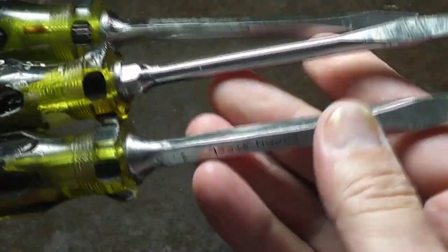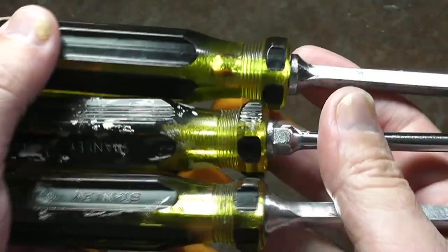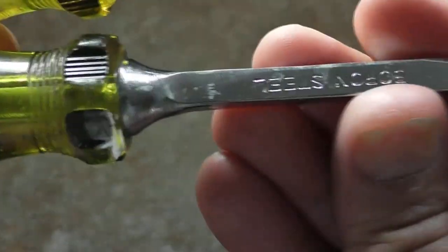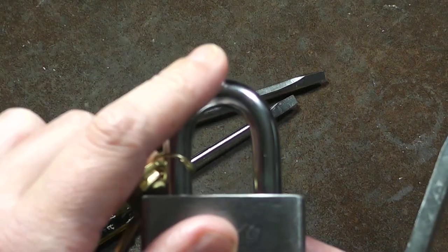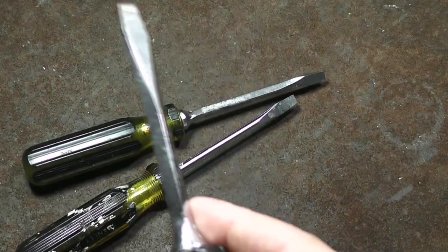Now part of the evolution is early on they were actually stamped boron steel, which was pretty impressive because boron steel is the same thing that padlock shackles, high quality padlock shackles are made of. It's very tough, very robust steel.